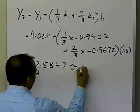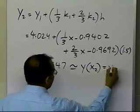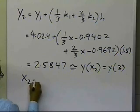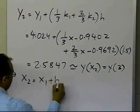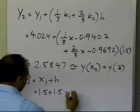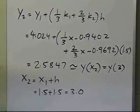And this is the approximate value of y at x2, which is the same as the value of y at 3. That's what we are trying to find, because x2 is nothing but x1 plus h, and x1 is 1.5, h is 1.5, so that gives me 3.0.